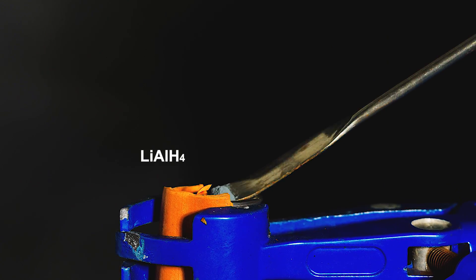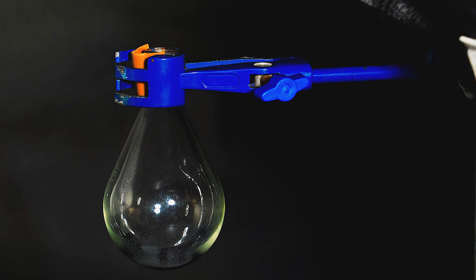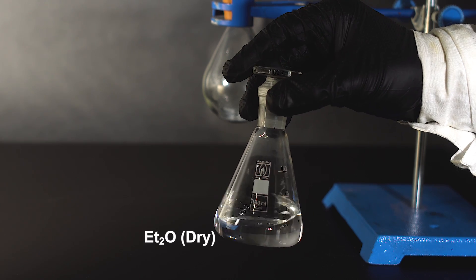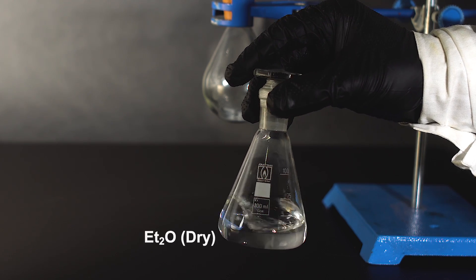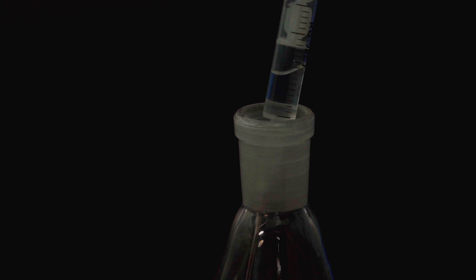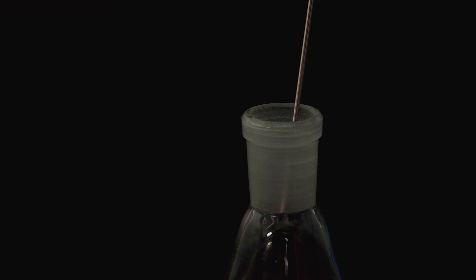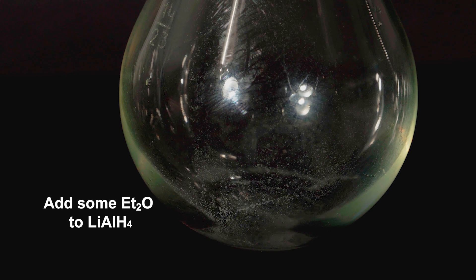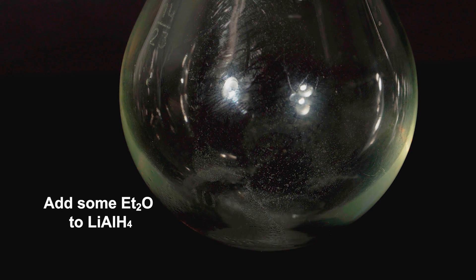We'll get germane by the reaction of lithium-aluminum hydride in dry diethyl ether and germanium tetrachloride. Diethyl ether must be absolutely dry, otherwise nothing will happen, because lithium-aluminum hydride will react with water a non-dried ether contains. Adding dry ether to lithium-aluminum hydride will not result in any gas emission whatsoever.